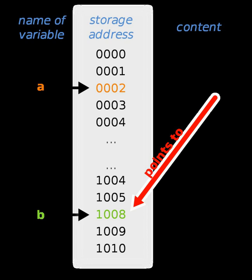A null pointer has a value reserved for indicating that the pointer does not refer to a valid object. Null pointers are routinely used to represent conditions such as the end of a list of unknown length or the failure to perform some action. This use of null pointers can be compared to nullable types and to the nothing value in an option type.